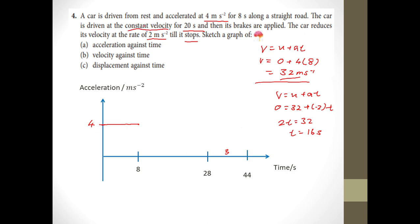After the first 8 seconds, constant velocity means acceleration is zero, so I draw the line on the x-axis from 8 until 28 seconds — that's zero acceleration. Then after 28 seconds, the car decelerates at negative 2 meters per second squared, so I mark at −2 and draw a straight horizontal line from 28 until 44 seconds. Make sure you use a ruler so the lines are straight.